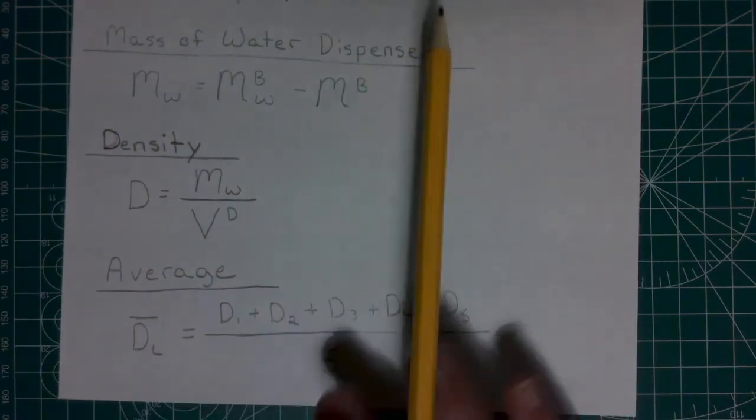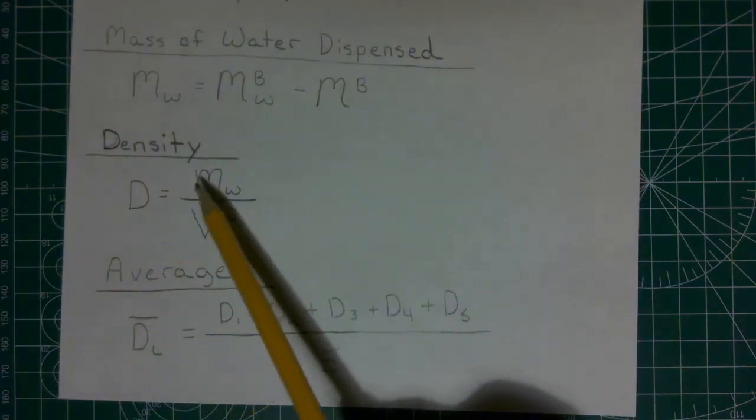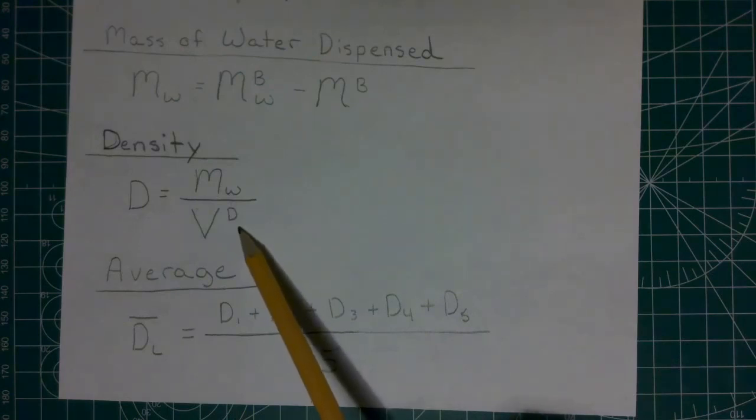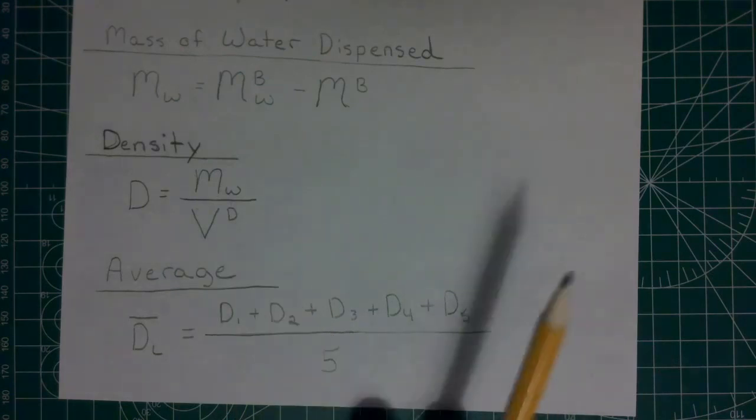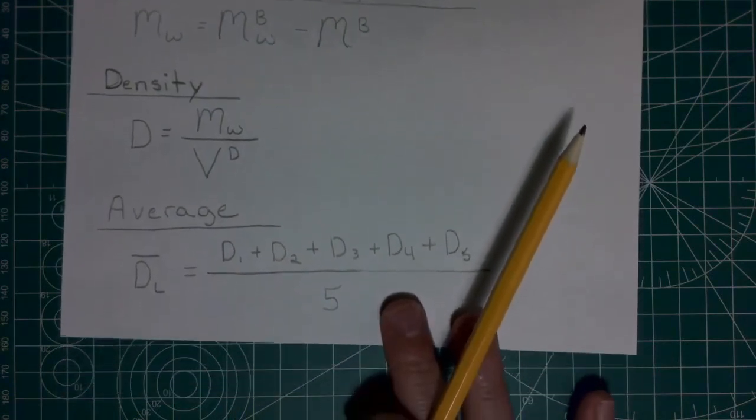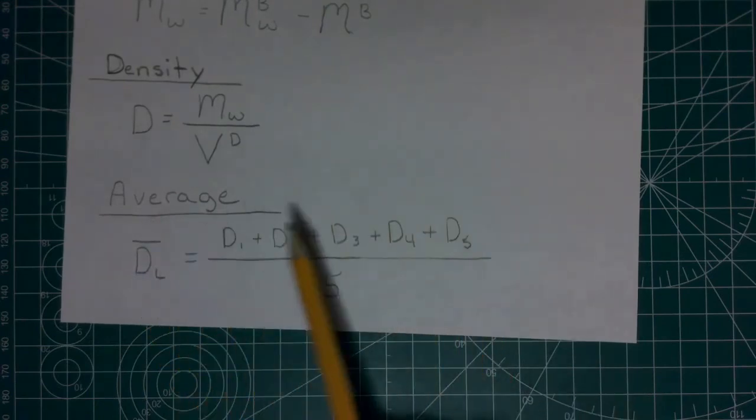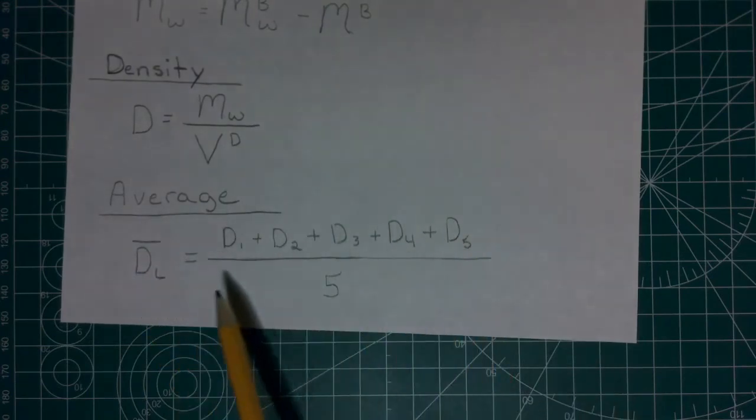And then finally we're going to calculate the density by taking the mass of the water and dividing it by the volume that was delivered. And then again we're going to average over all five trials.